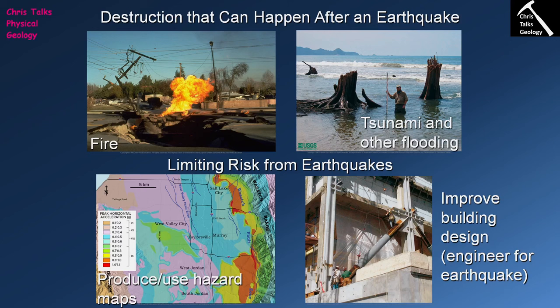Some buildings have been constructed where the foundation is literally built on shock absorbers. When an earthquake happens, the shock absorbers essentially absorb most of the movement produced by the earthquake, allowing the building to stay relatively steady and making it less likely to be damaged.